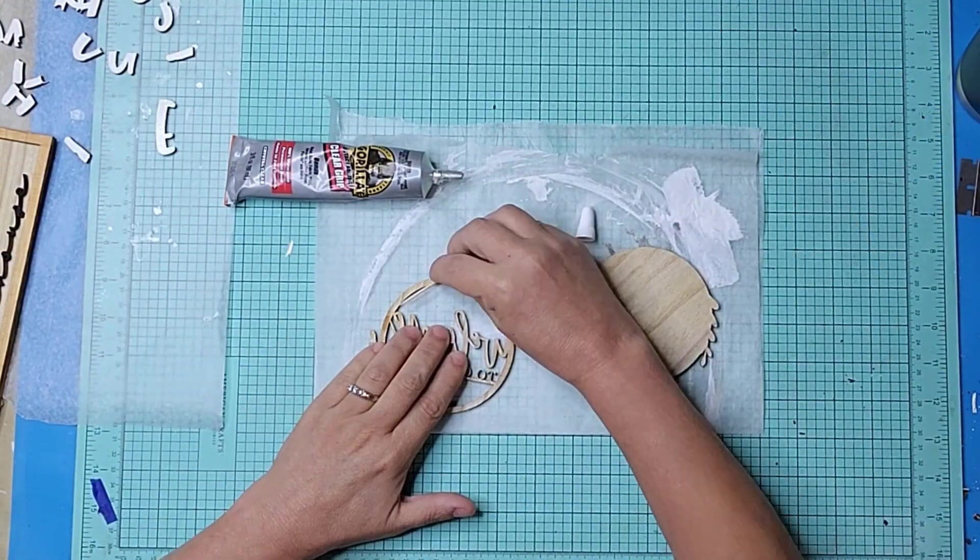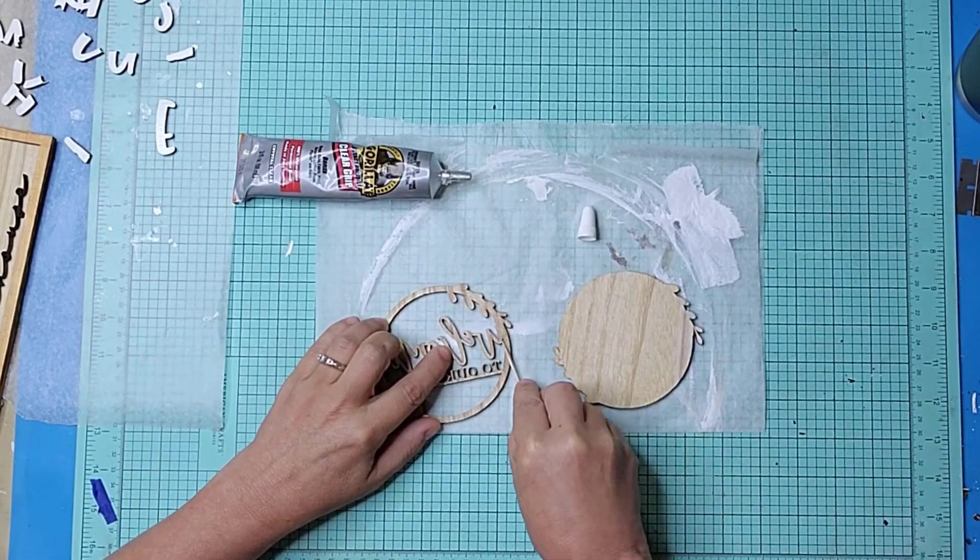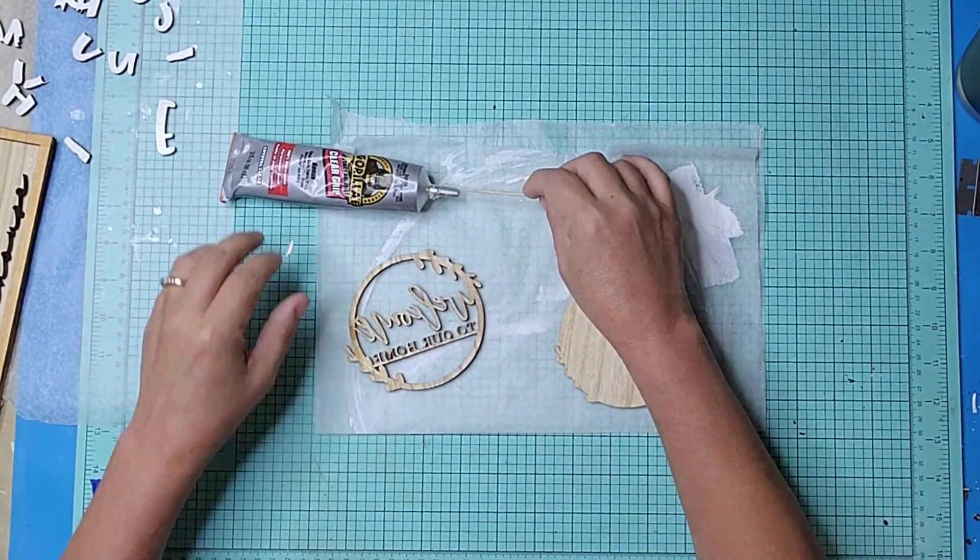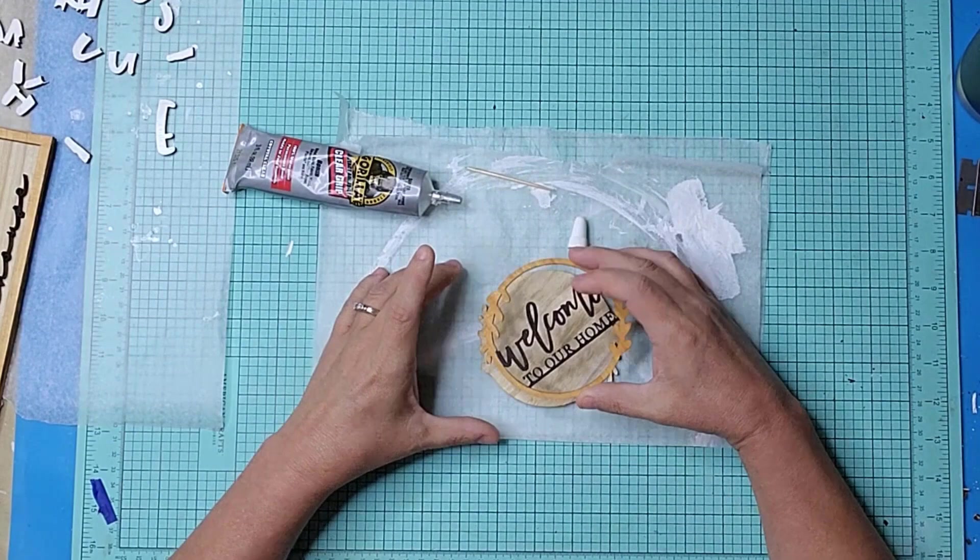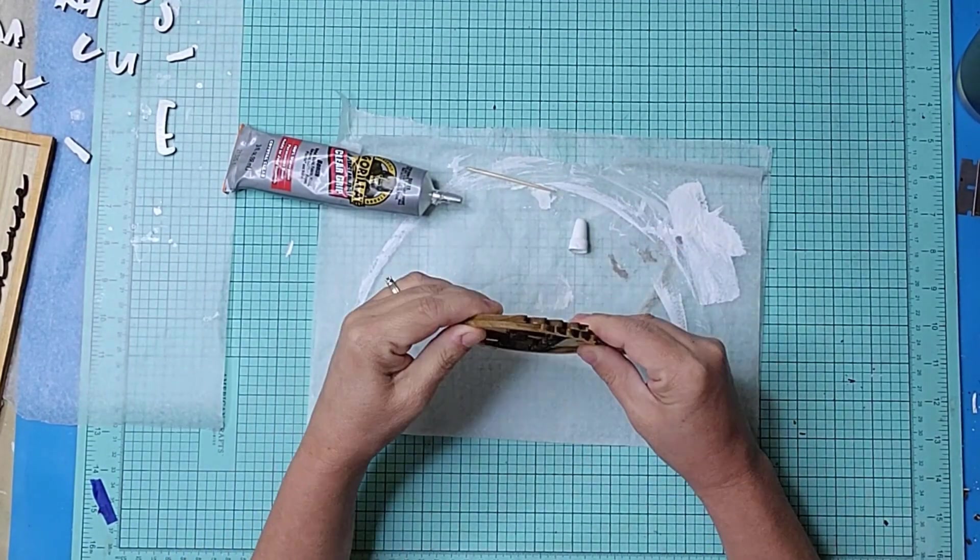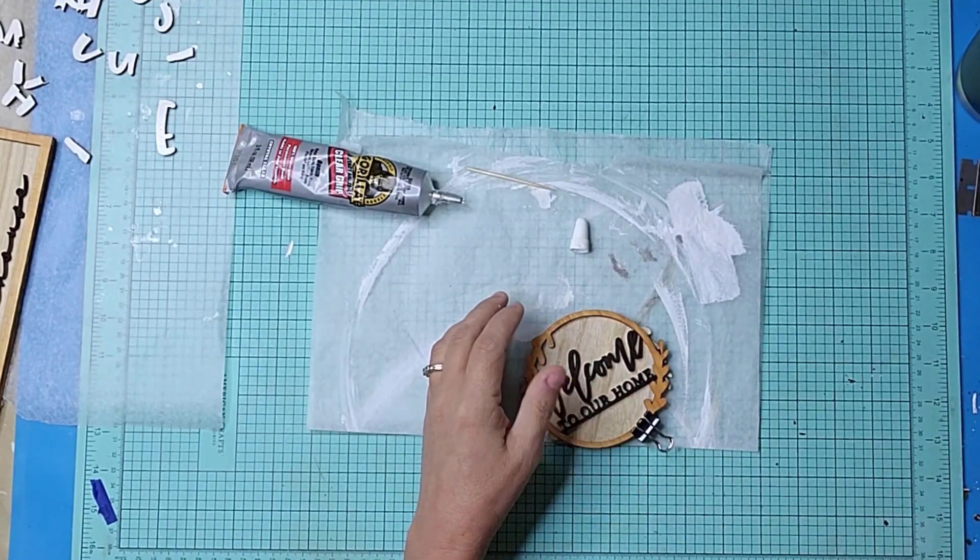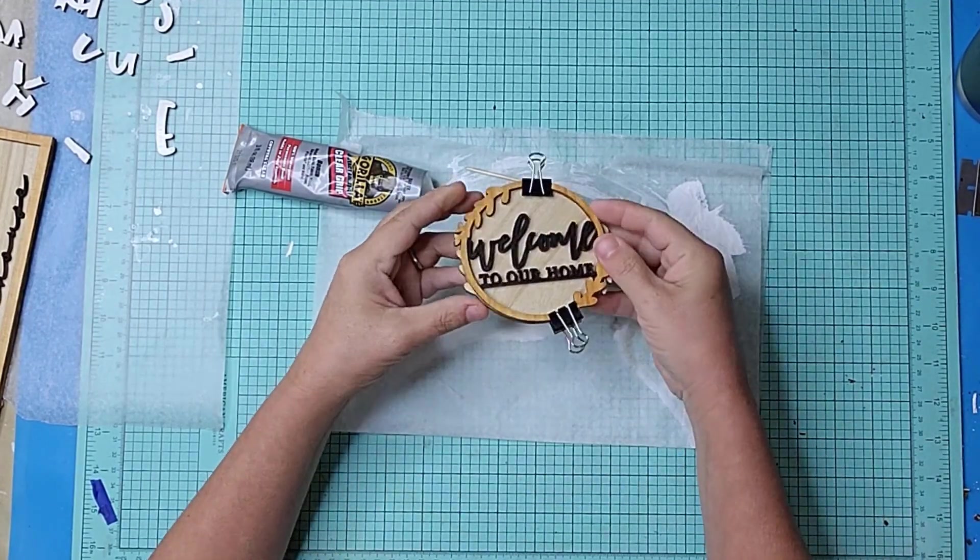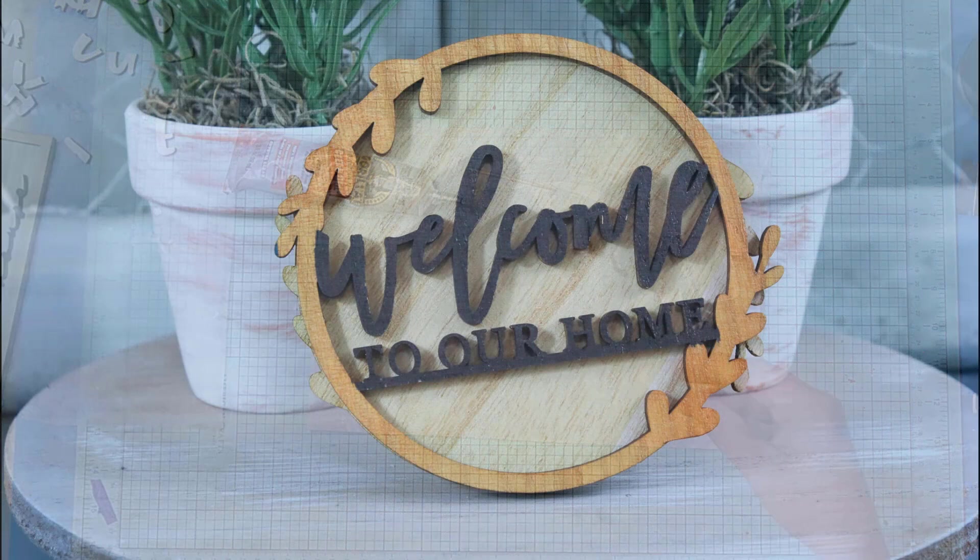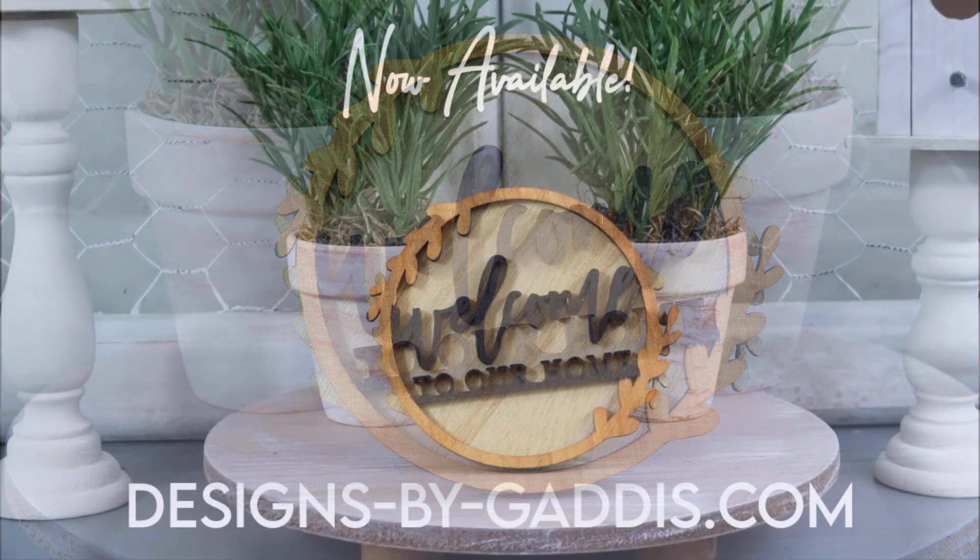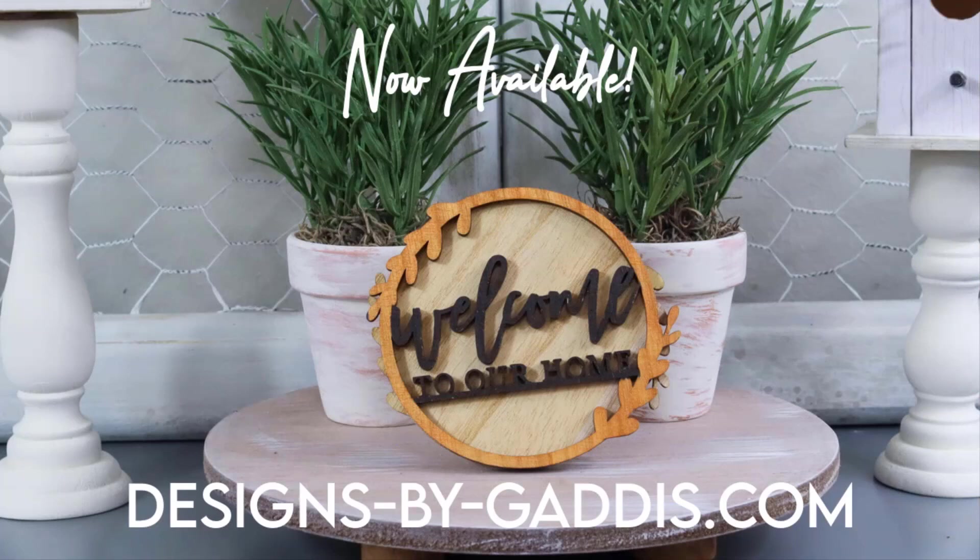I used a toothpick and applied some Gorilla Clear Grip glue to the front piece and then pressed it into place on the back piece. To hold everything in place, I used two small binder clips until the glue had time to dry. And just look at how stinking sweet the little wood wreath turned out. I created mine only four inches so it would fit on a tier tray. But you can make it larger or even smaller depending on how you want to use it.